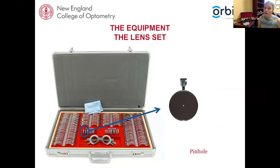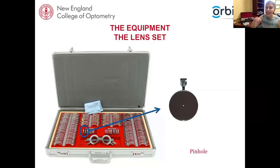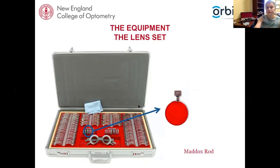You also have a stenopaic slit in your set — an older way of testing for astigmatism, not as accurate as JCC but still handy at times. There's also a pinhole occluder, which is really useful for determining whether low visual acuity is due to refractive error or pathology. It works like a pinhole camera — when the patient looks through that tiny hole, it eliminates the refractive error and focuses light on the retina. If vision improves to near 20/20, you know it's refractive. If it doesn't improve, there may be cataracts, macular degeneration, or optic nerve issues.